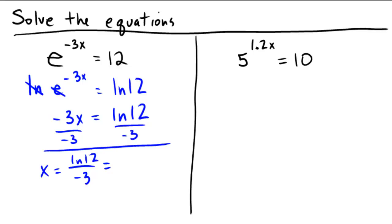And let's grab a calculator and see what the decimal of this looks like, even though we have an exact answer here already. ln of 12 divided by the number negative 3 is negative 0.8283 to 4 decimal places.